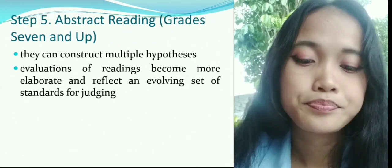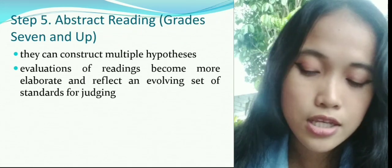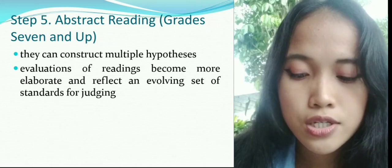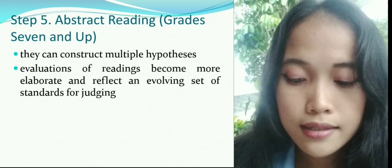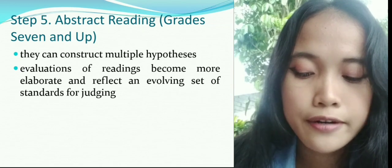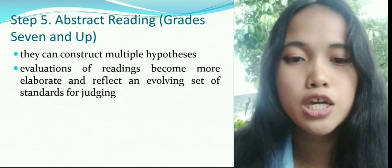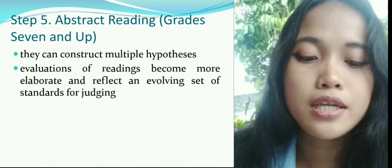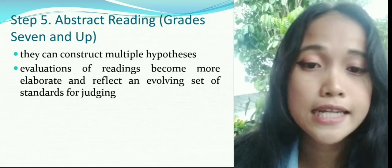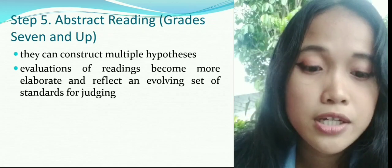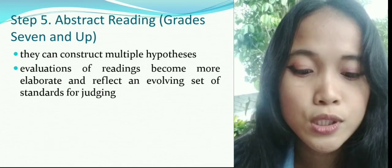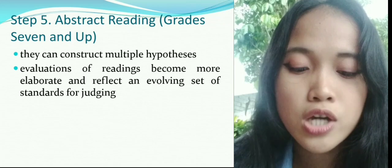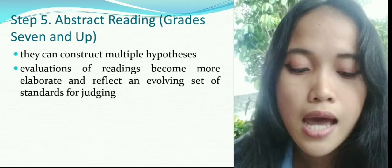Stage 5: Abstract Reading, Grade 7 and Up. The description of this stage is that students can construct multiple hypotheses and their evaluations of reading become more elaborate and reflective, involving a set of standards for judging. This stage includes the ability to understand subjects on a complex level through analysis and evaluation, and the ability to apply knowledge to problems. This ability makes it possible for students to exercise creativity. This stage also helps the child become more elaborative and reflective about what they read.